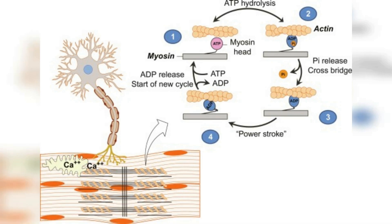Neuromuscular Junction. The neuromuscular junction is a specialized synapse between a motor neuron and a muscle fiber, and it plays a crucial role in initiating muscle contraction. When an action potential reaches the axon terminal of the motor neuron, it triggers the release of the neurotransmitter acetylcholine into the synaptic cleft. Acetylcholine then binds to receptors on the muscle fiber, causing depolarization of the muscle cell membrane and the release of calcium ions from the sarcoplasmic reticulum. This ultimately leads to the binding of actin and myosin, resulting in the contraction of the sarcomere. Without the proper function of the neuromuscular junction, muscle contraction cannot occur.